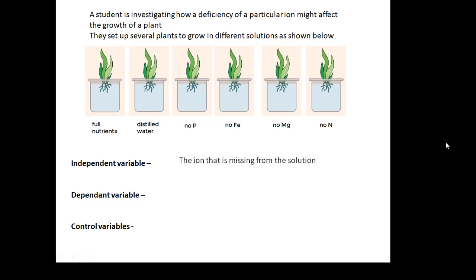Our independent variable is the missing ion. We're investigating deficiencies. So which ion is missing from the growth solution?